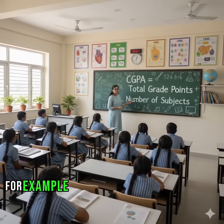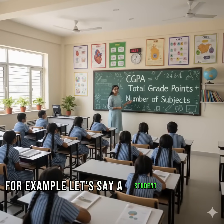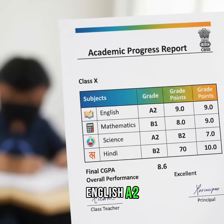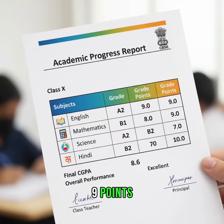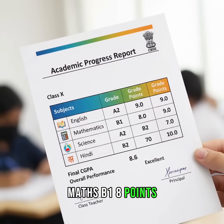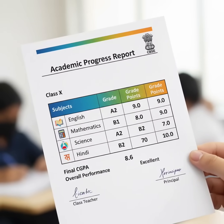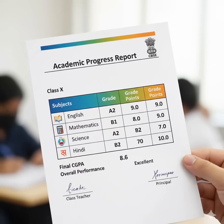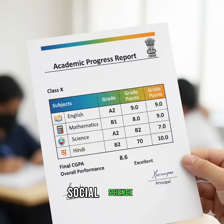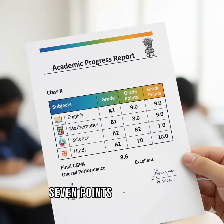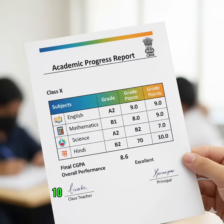For example, let's say a student got these grades: English — A2, 9 points; Maths — B1, 8 points; Science — A2, 9 points; Social Science — B2, 7 points; and Hindi — A1, 10 points.